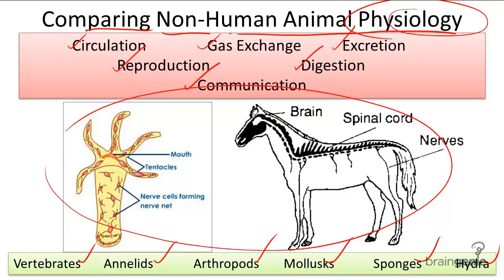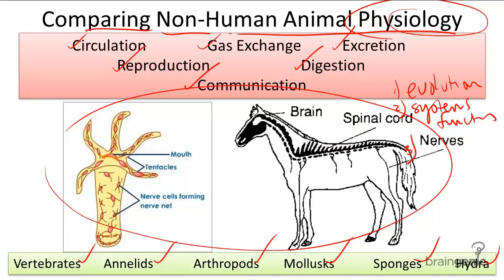One reason to pay special attention to differences in body organization among animals is to understand more about the evolutionary relationships among these organisms. Two, to get a better sense of how these systems work and their functions. And three, to possibly discover alternative pathways to survival among humans.